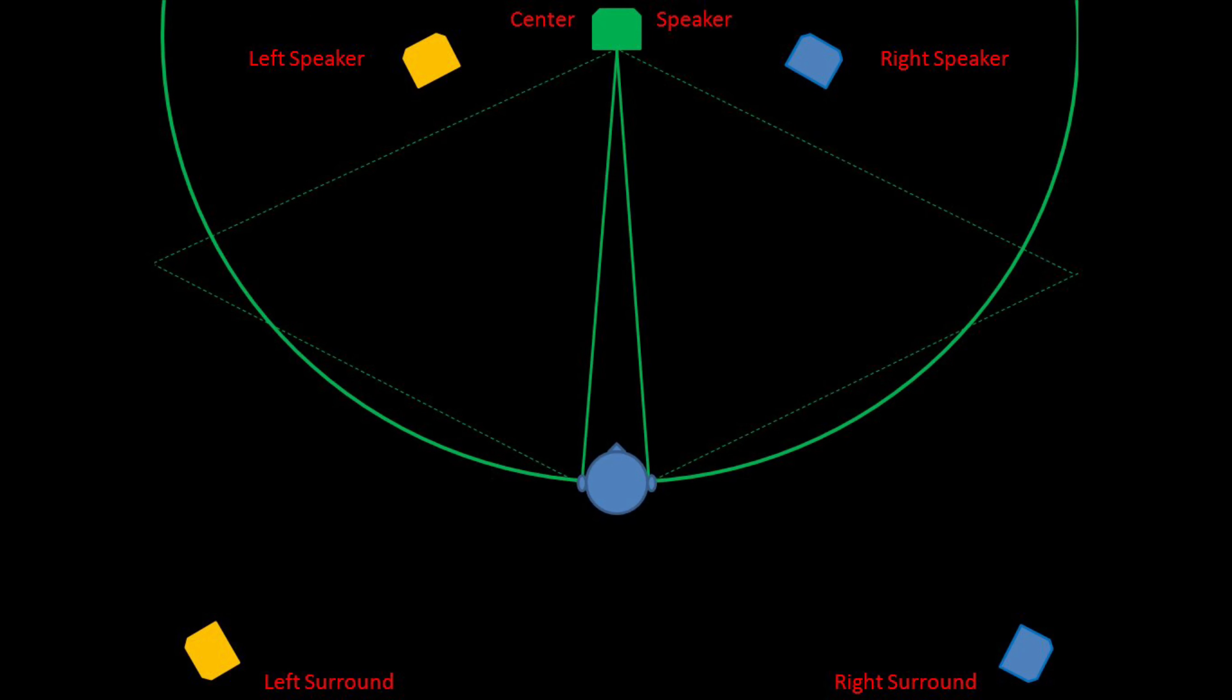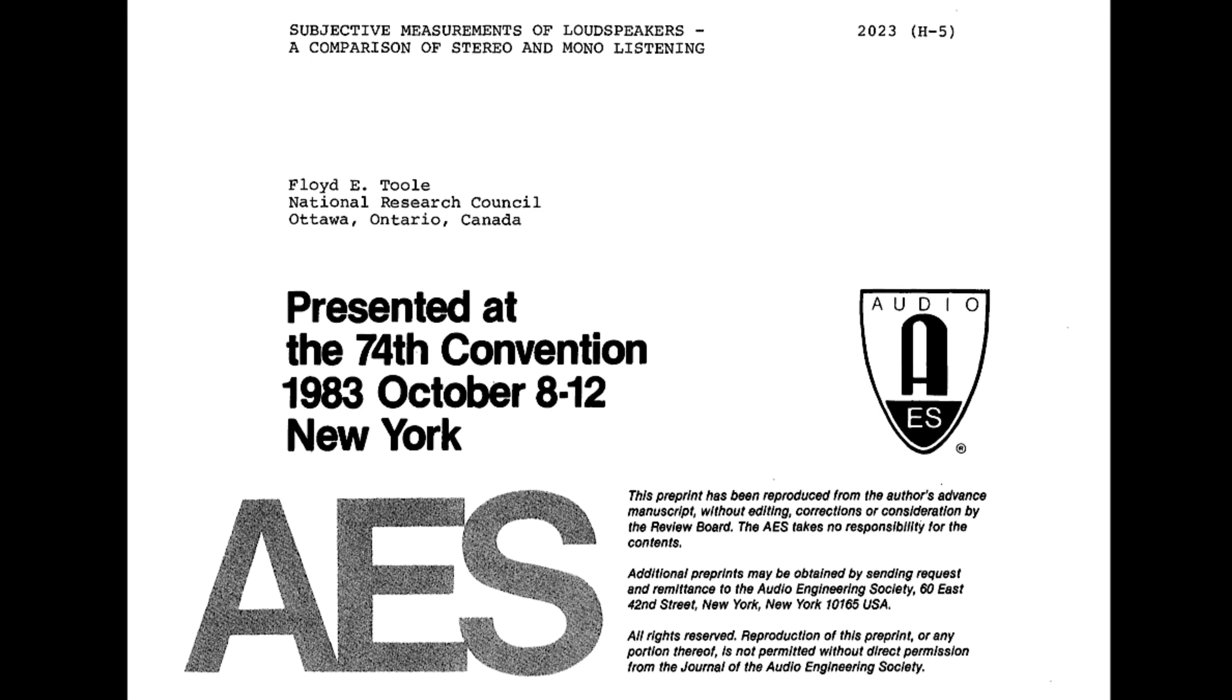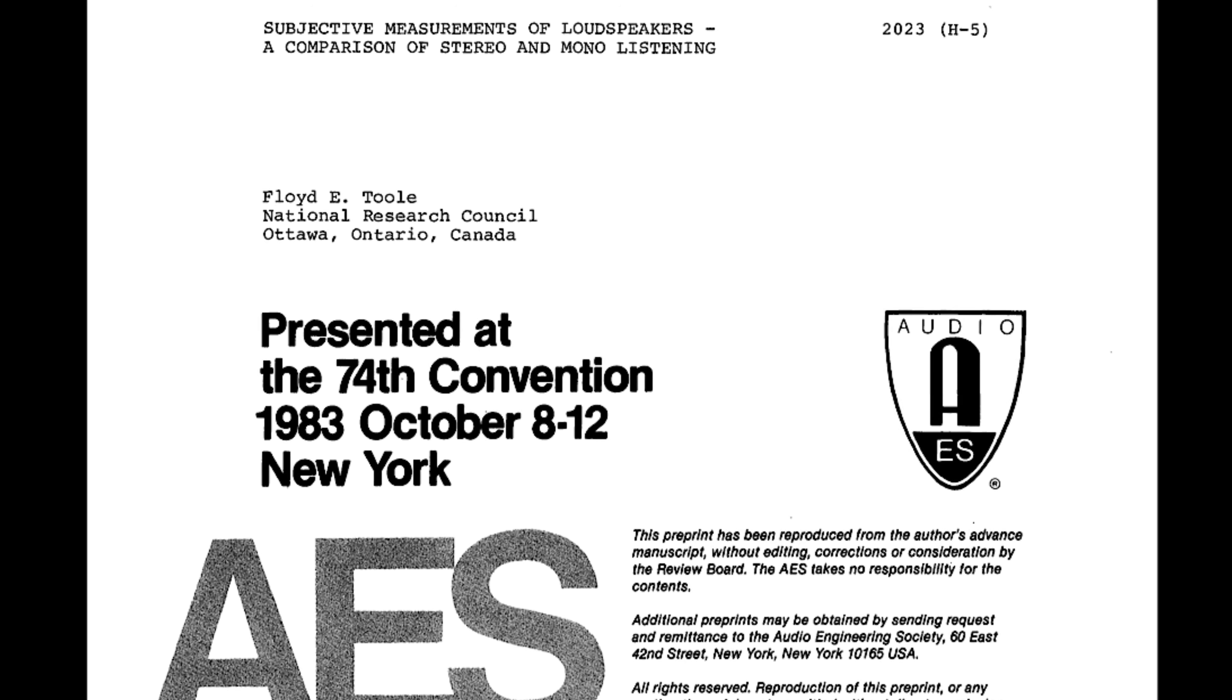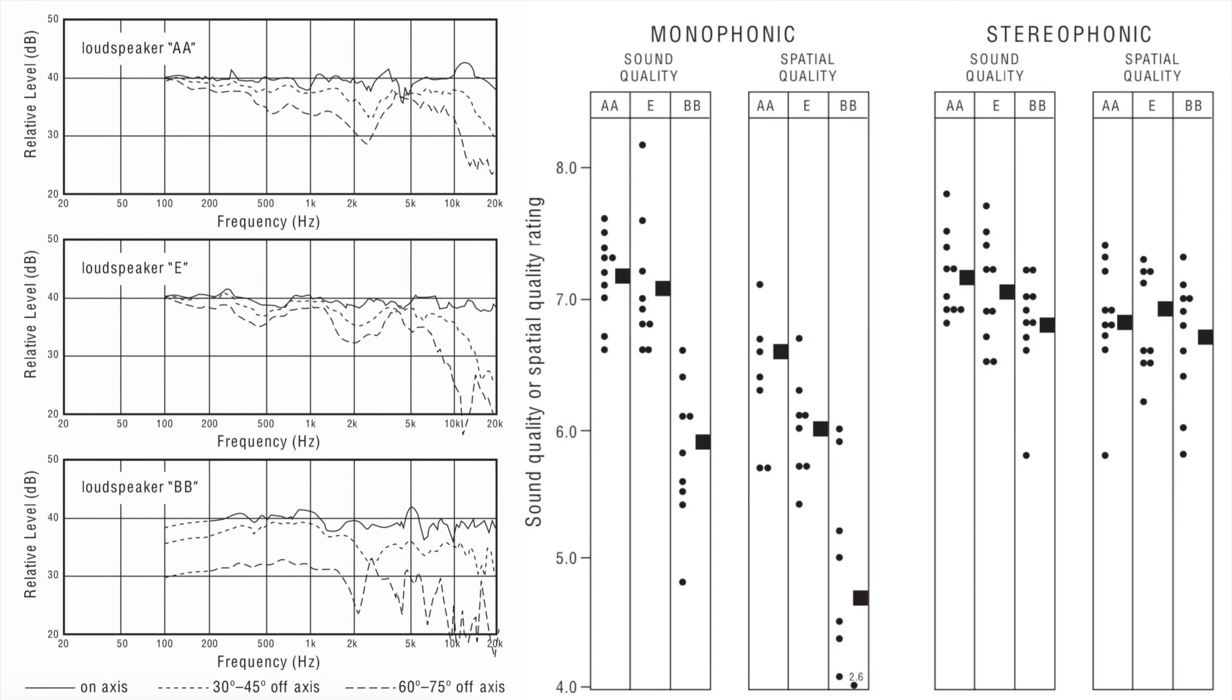But their listening lab is using the speaker in mono mode as they claim this is much better for the listener to evaluate the speaker's performance. Back in the 1980s, Dr. Toole and his team did extensive study and concluded why testing mono mode is better to evaluate loudspeaker performance. The stereo speaker setup will reduce the speaker's performance difference as this study showed. In other words, speakers will sound better in stereo setup.